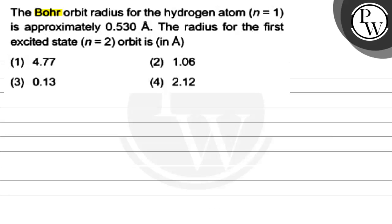Hello, let's read this question. The Bohr orbit radius for hydrogen atom n equals 1 is approximately 0.530 angstrom. The radius for the first excited state n equals 2 orbit is in angstrom. We have four options given and we have a correct option identified and we have to solve this.